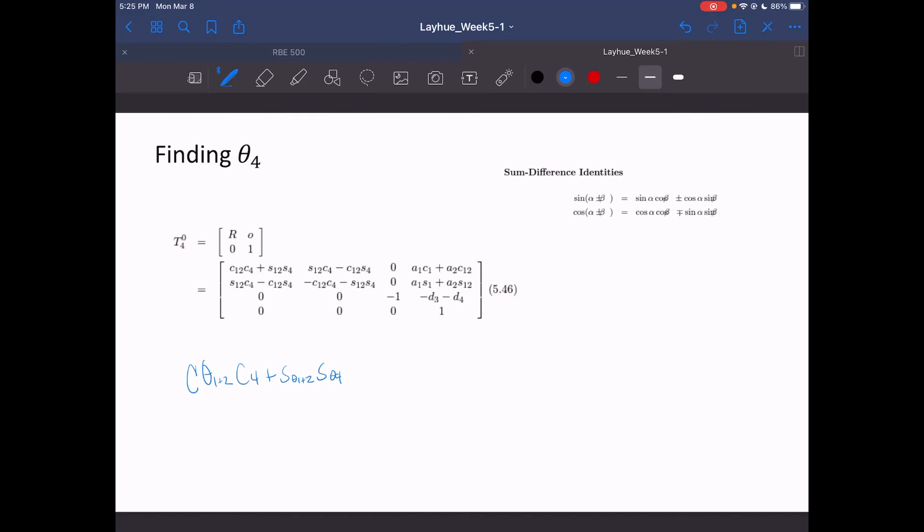So we have cosine of theta1 plus theta2 times cosine of theta4 plus sine of theta1 plus theta2 times sine of theta4. One thing to note here, this is very similar to our cosine identity here, so then we can use that to simplify. But to make it easier, theta1 and theta2 will make A, and theta4 will make B. So then this can be rewritten as cosine A cosine B plus sine A sine B.